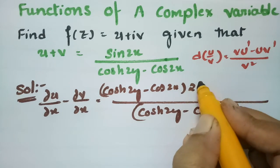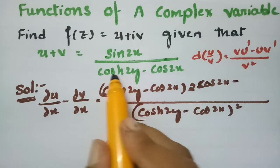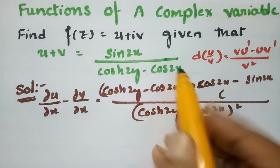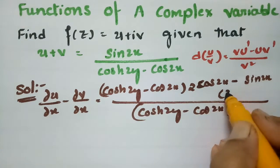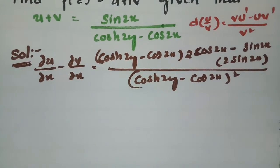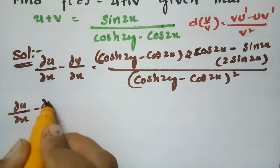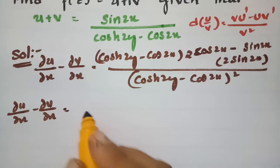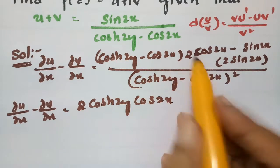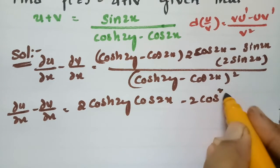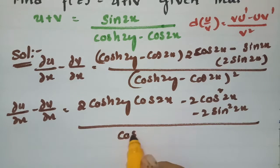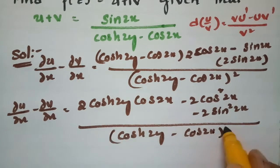With respect to x, cos(2x) differentiates to give 2·cos(2x). Differentiating -cos(2x) in the denominator gives -(-2sin(2x)) = +2sin(2x). Expanding the numerator: 2·cosh(2y)·cos(2x) + 2·cos²(2x) + 2·sin²(2x), all divided by (cosh(2y) - cos(2x))².